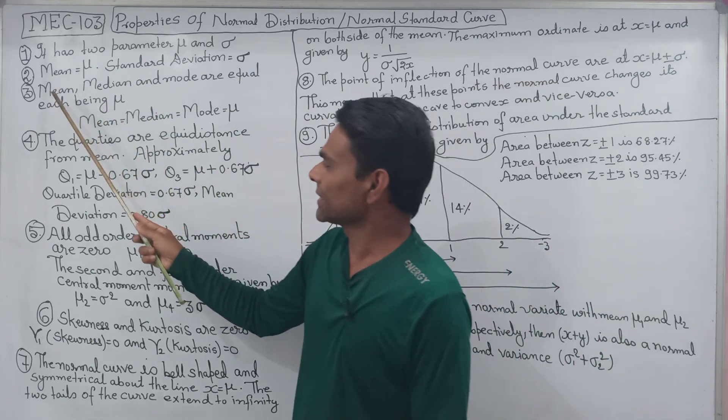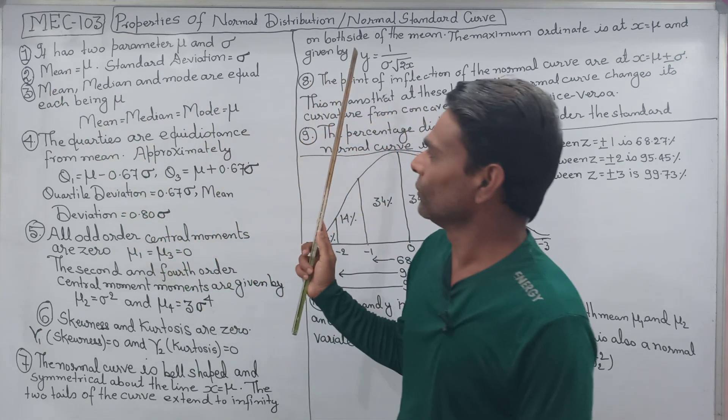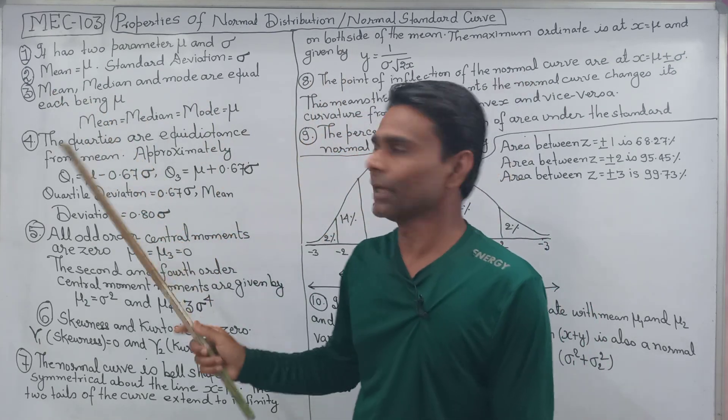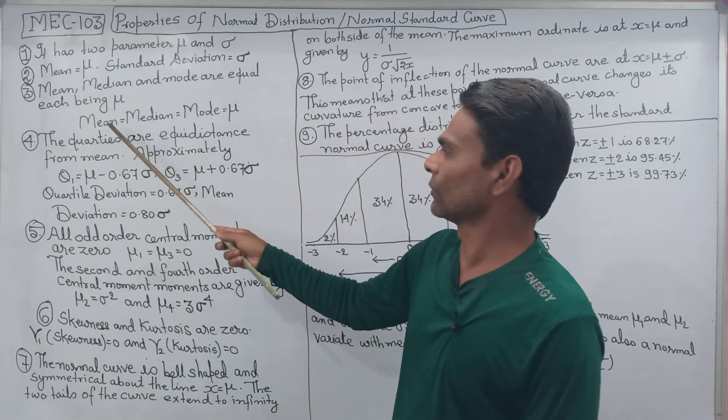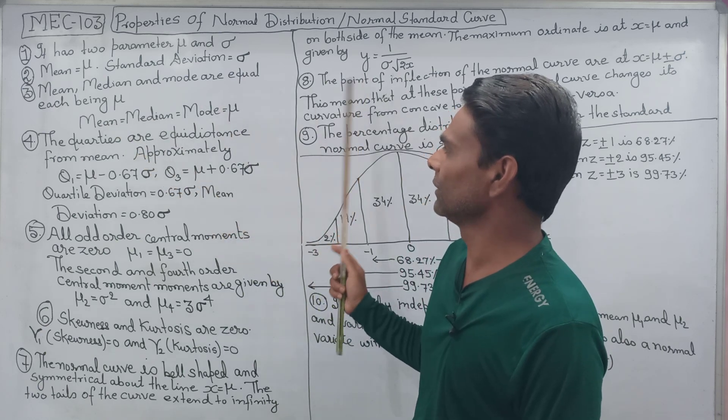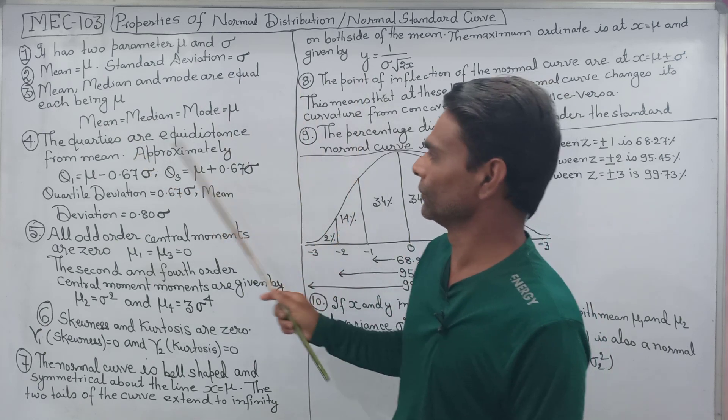Mean, median, and mode — all three are equal. They are equal to mu. So mean = median = mode = mu.